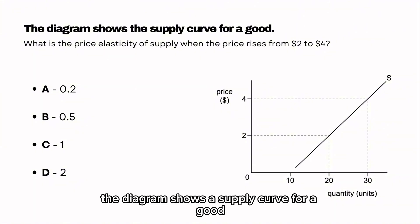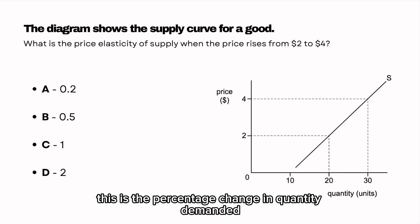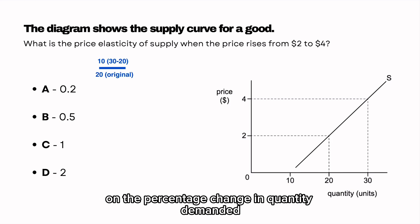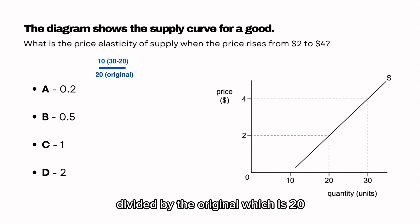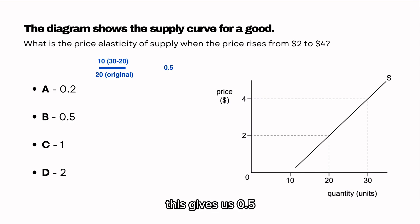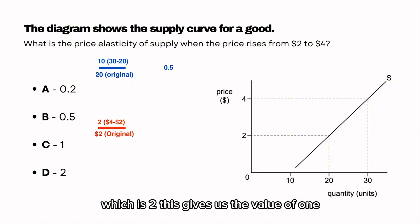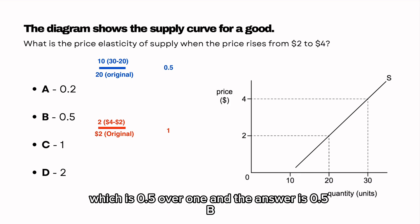The diagram shows the supply curve for a good. What is the price elasticity of supply when the price rises from $2 to $4? The formula is the percentage change in quantity supplied divided by the percentage change in price. The percentage change in quantity supplied is the difference of 10 (between 20 and 30 units) divided by the original 20, giving 0.5. The percentage change in price is the change of $2 divided by the original $2, giving 1. Dividing 0.5 by 1 gives us 0.5. The answer is B.